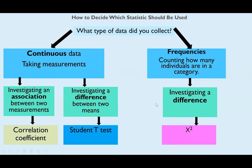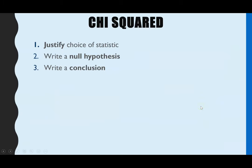Looking at the flow diagram, we can see how you would choose this statistic. This is the only statistic in A-level biology that you would use if your data is frequencies, meaning the data is counting individuals within particular categories, and it's to investigate a difference. That's when we'll be using chi-squared.